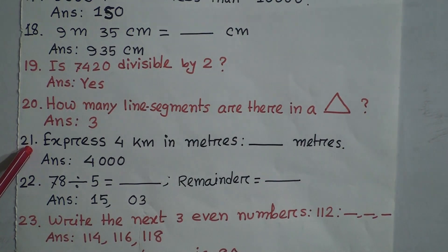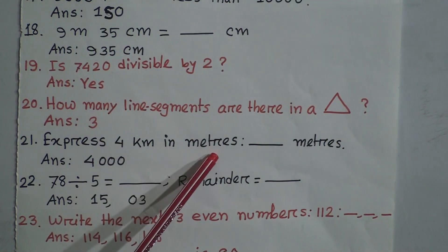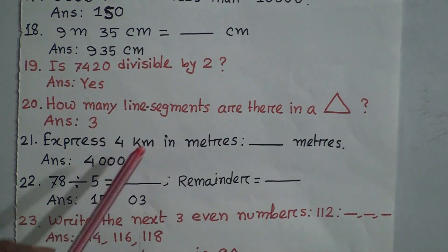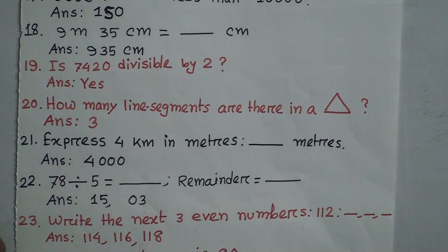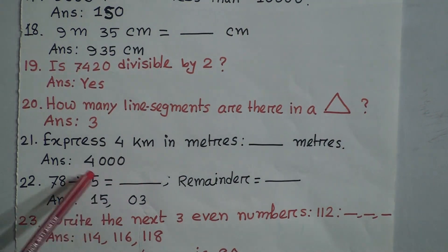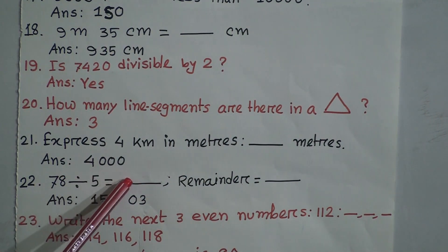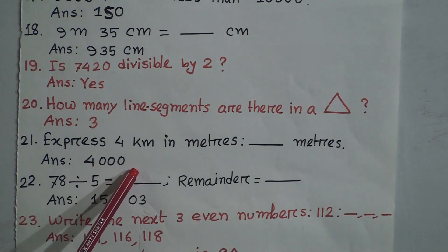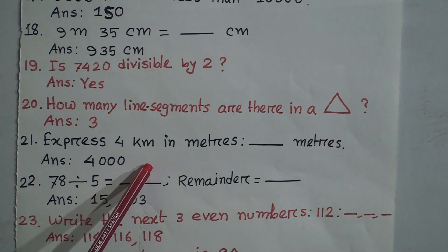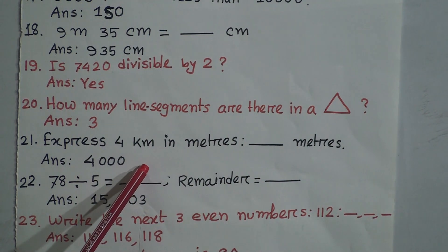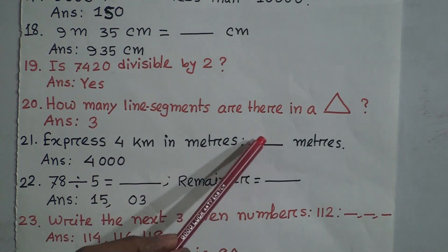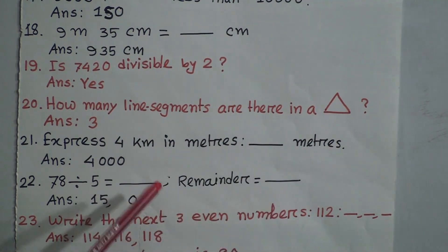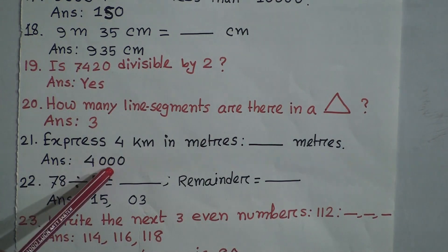Question 21: Express 4 kilometers in meters. We know 1 kilometer equals 1000 meters. Therefore, 4 kilometers equals 4000 meters. The answer is 4000.